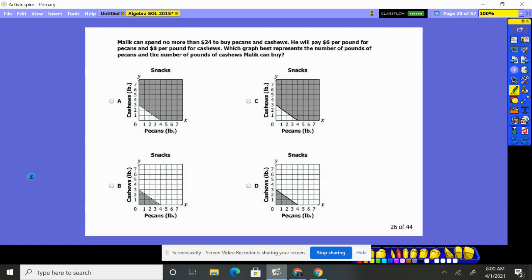Number 26. Malik can spend no more than $24. So he's got $24, that's the most he can spend. He wants to buy pecans and cashews. He'll pay $6 per pound of pecans and $8 per pound for cashews. So which graph here represents the number of pounds of pecans and cashews that he can buy?